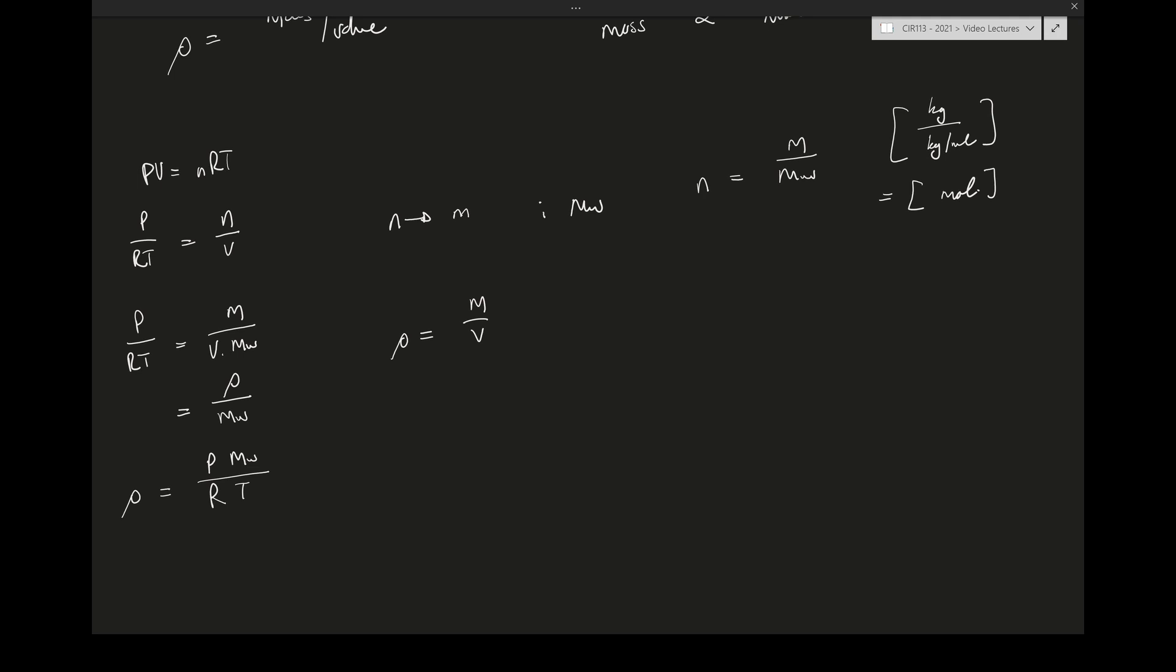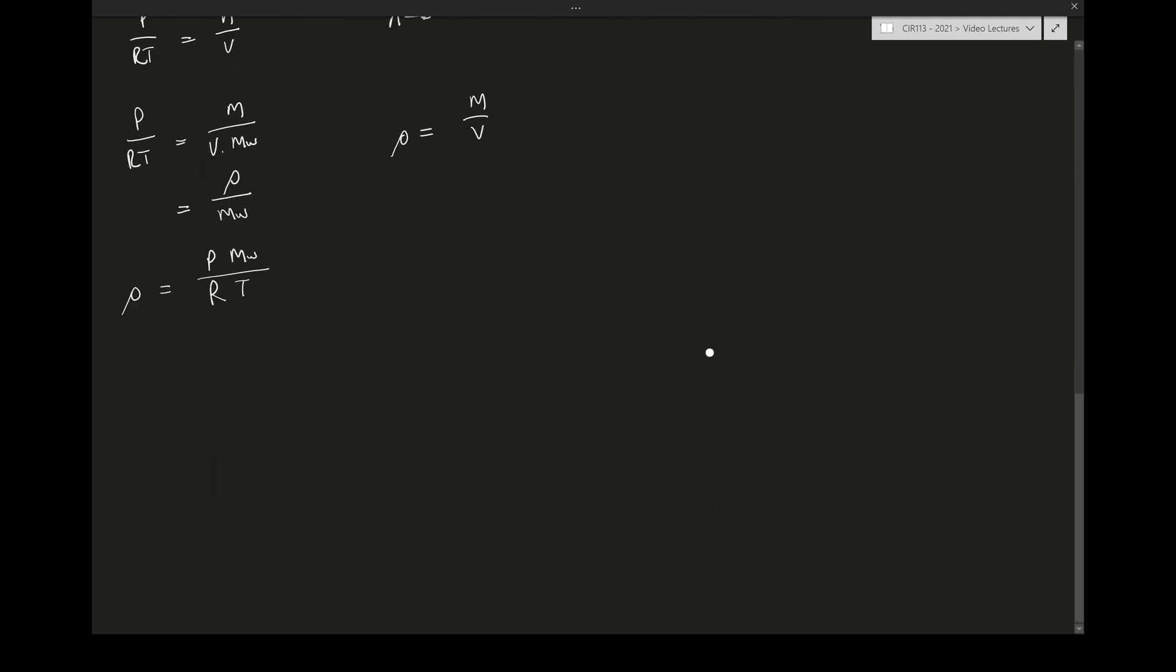This is quite interesting. Lastly, same as we had with liquids and solids, we could also have a specific gravity of gases, where the specific gravity is the density of our gas in the system divided by a reference density. This reference density is normally air at STP.